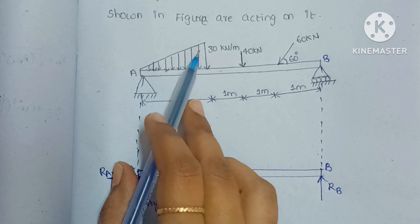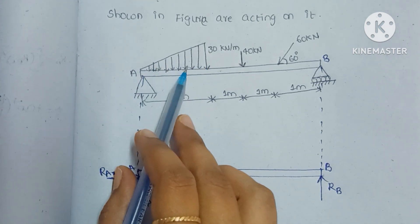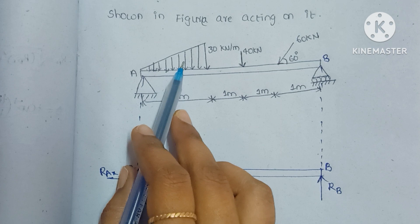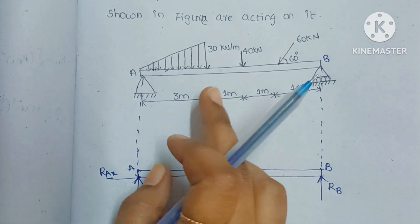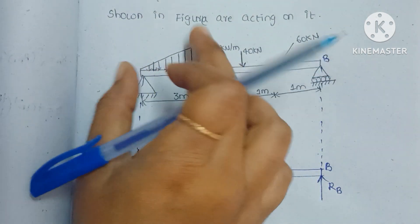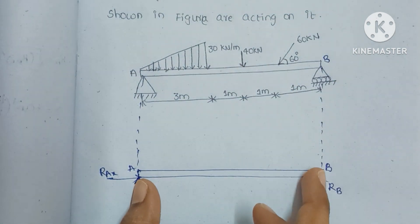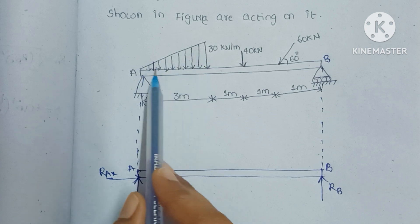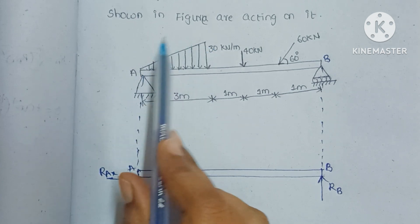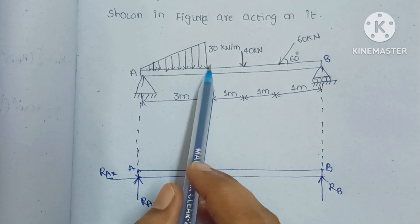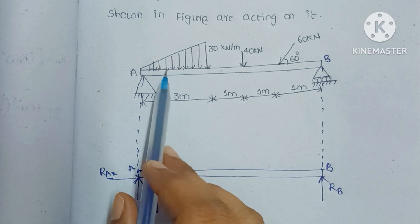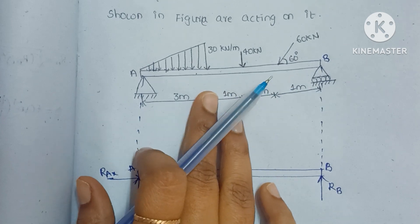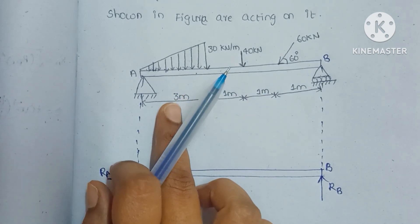They have given a uniformly varying load, which is a triangularly distributed load. To draw the free body diagram, we have to convert every type of load into a point load. To convert this uniformly varying load into a point load — this was explained in the second class of Strength of Materials or Applied Mechanics, so please visit that video.